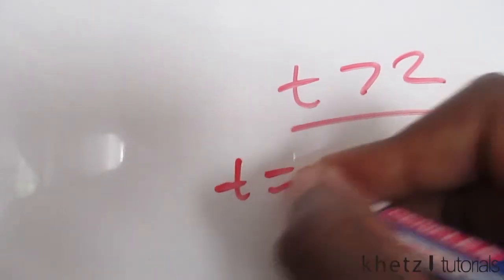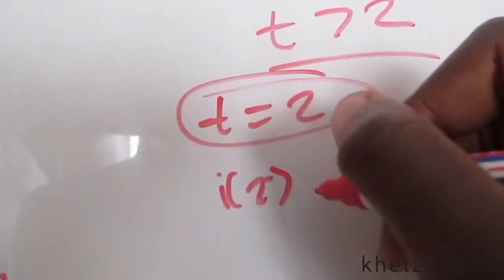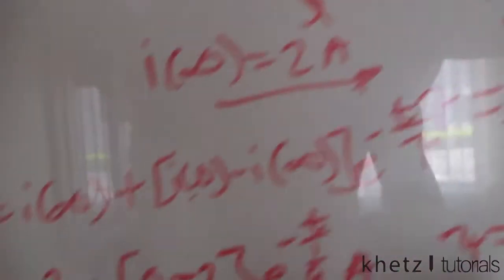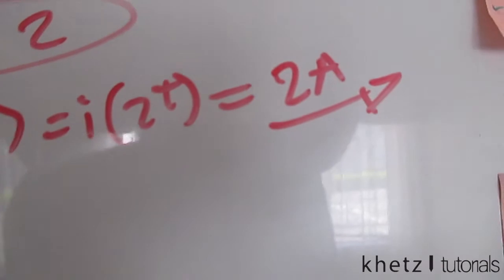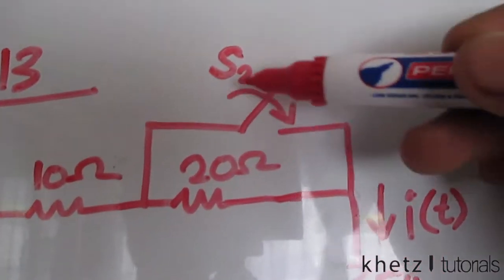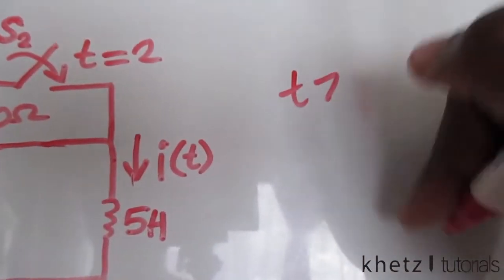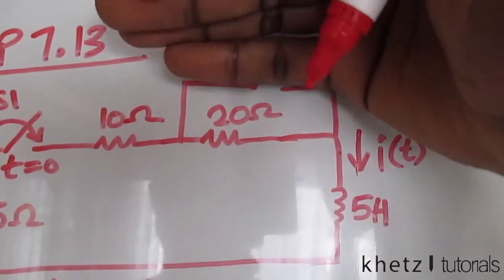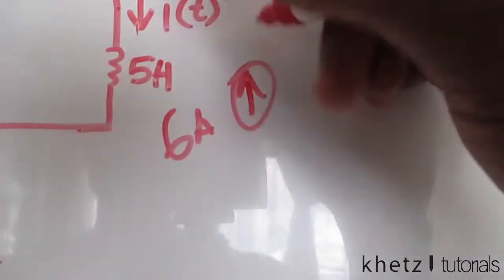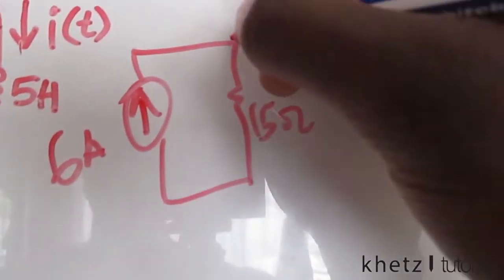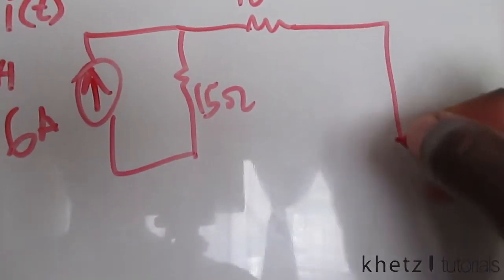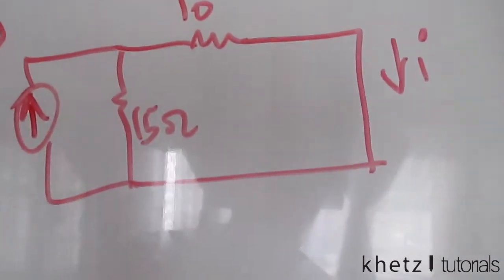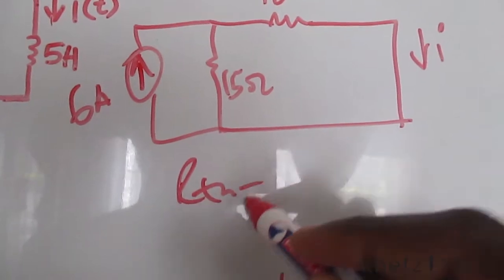Before proceeding to t > 2, we substitute t = 2 into the formula to find the initial condition for the next interval. Substituting t = 2 gives i(2) ≈ 2 A. At t = 2, S2 closes, placing a short circuit in parallel with the 20 Ω resistor, effectively removing it. The new circuit has 15 Ω, 10 Ω, a short circuit, and the inductor.